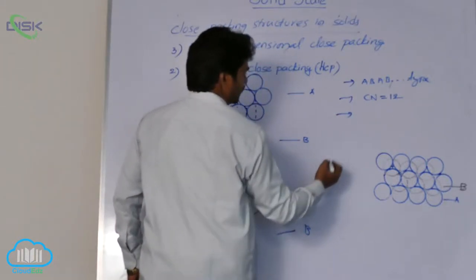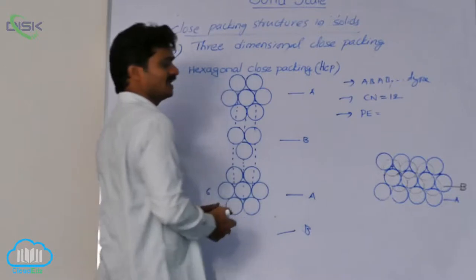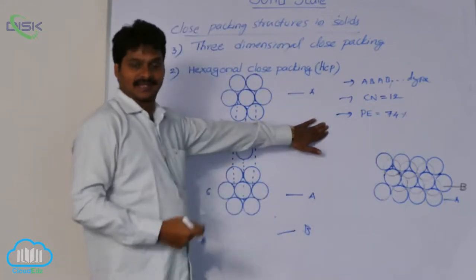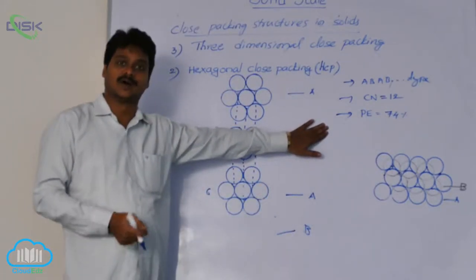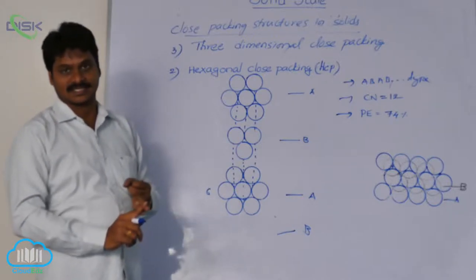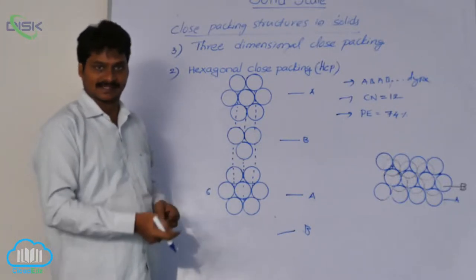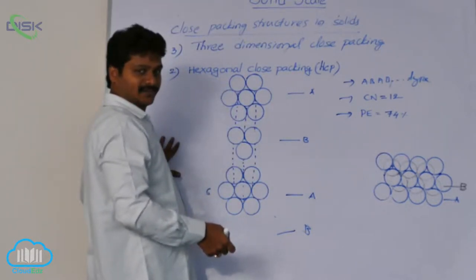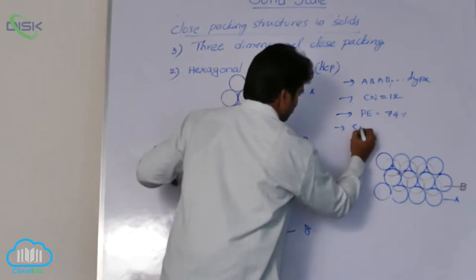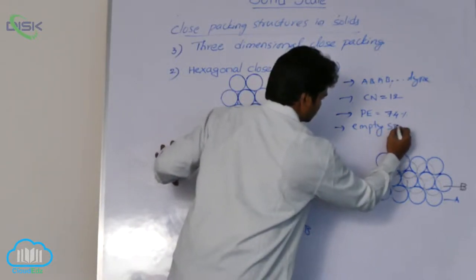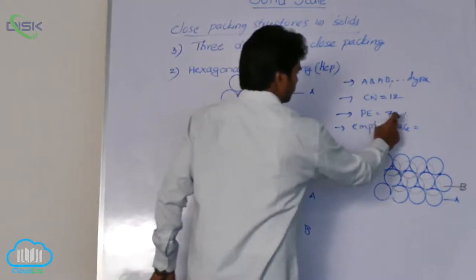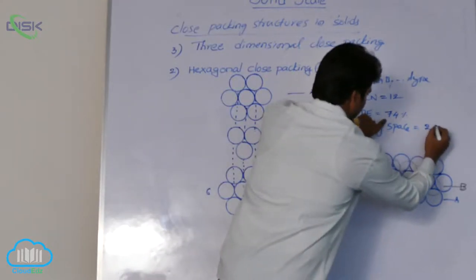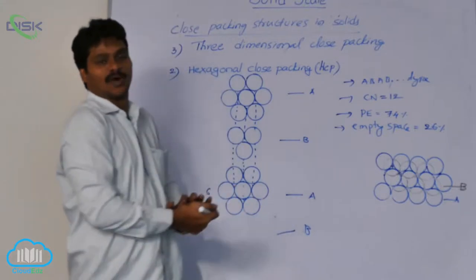What is the packing efficiency in HCP? The packing efficiency is 74% — meaning 74% of the volume is occupied. I discussed how to calculate packing efficiency in simple cube, BCC, FCC, and HCP earlier. Since 74% is occupied, the remaining empty space or void space is 26%.